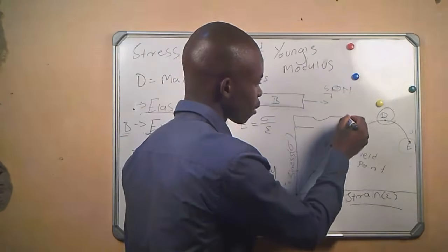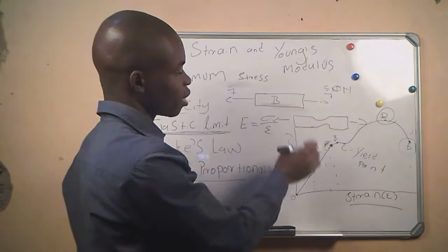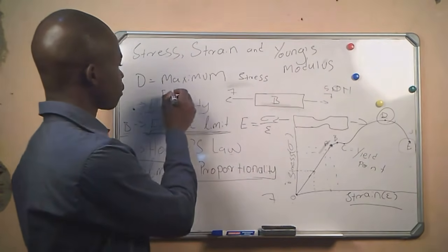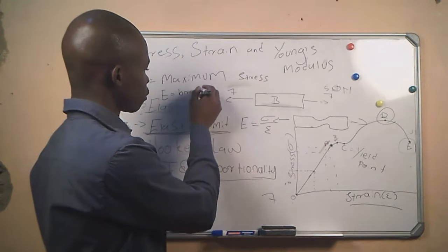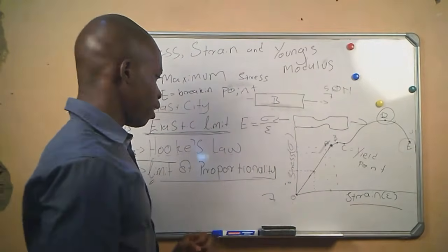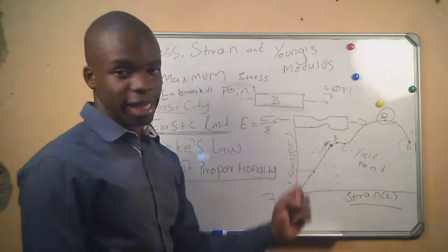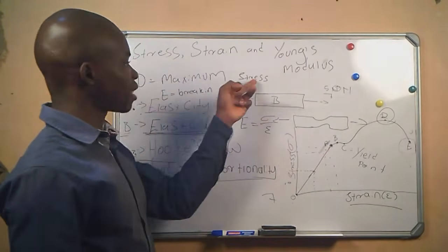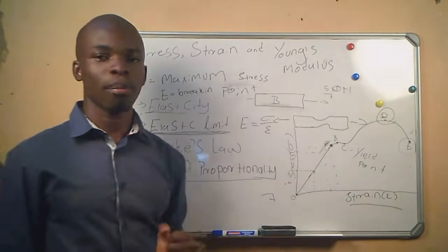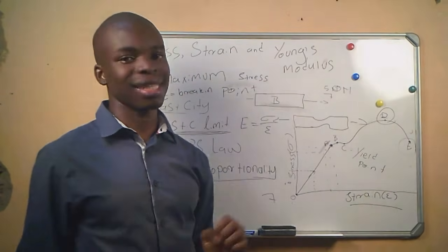At point E, the object will form a neck — as the tensile forces are applied, the material narrows. We call E the breaking point: it is where the object breaks under the maximum stress being applied. So to recap: A is the limit of proportionality, B is the elastic limit, C is the yield point, D is the maximum stress, and E is the breaking point.